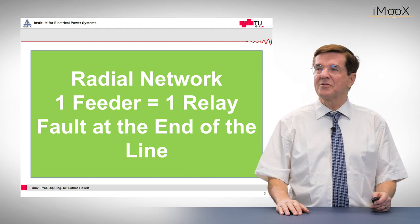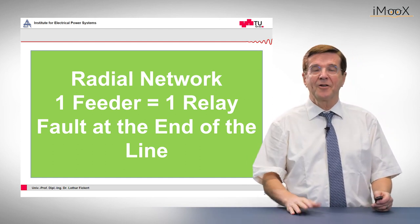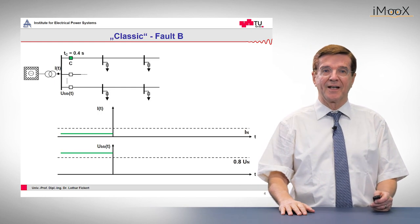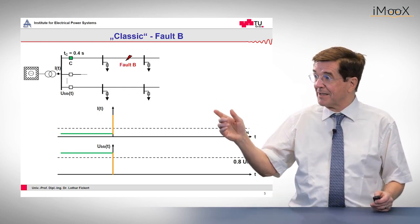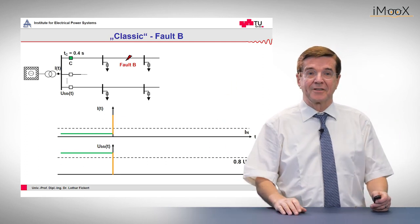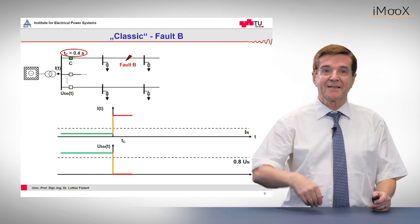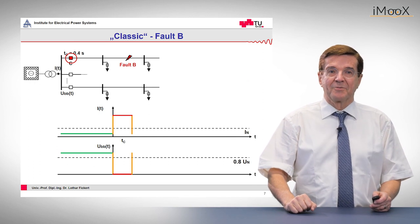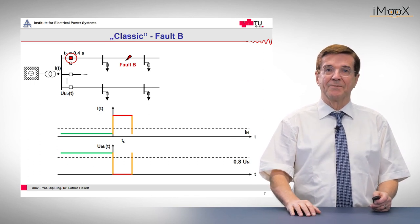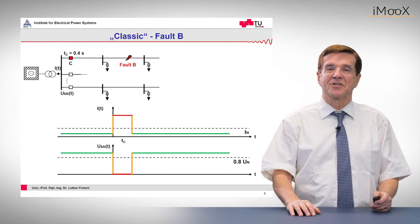Let's start with a very simple radial network where one feeder is protected by one relay and we assume a fault at the end of the line. So we have the network, a fault occurs, and immediately the current goes up and the voltage on the busbar drops. Then the timer is started. After, for example, 0.4 seconds, the circuit breaker is opened and we trip.